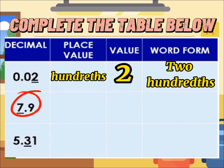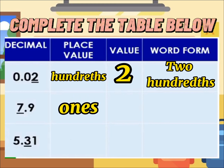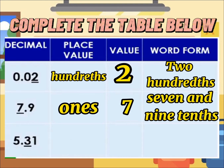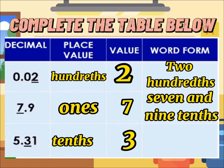Proceed to the second decimal, which is 7.9. What do you think is the place value of the underlined digit? Very good — it is ones. What is the value? Very good — it is seven. Its word form is seven and nine tenths. For the last decimal, what is the place value of the underlined digit? Very good — it is tenths. How about its value? Very good — it is three. The word form of 5.31 is five and thirty-one hundredths.